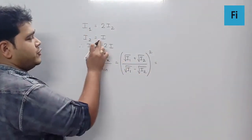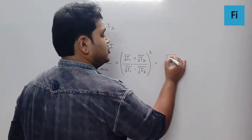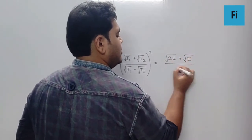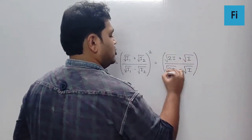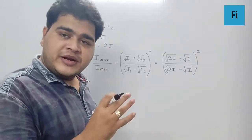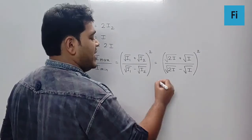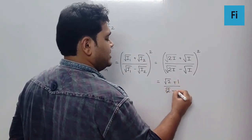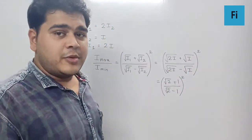Substituting I1 = 2I and I2 = I, we get (√(2I) + √I)² / (√(2I) − √I)². Taking √I common from numerator and denominator and cancelling, we get (√2 + 1)² / (√2 − 1)².